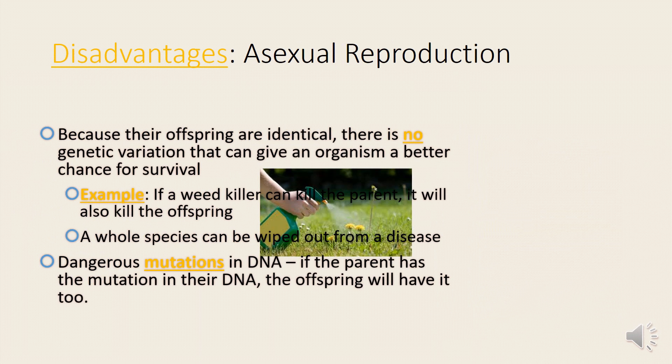Disadvantages of asexual reproduction: because offspring are identical, there is no genetic variation that can give an organism a better chance for survival. For example, if a weed killer can kill the parent, it will also kill the offspring. Whole species can be wiped out from a disease.